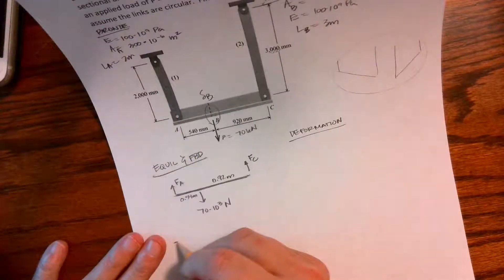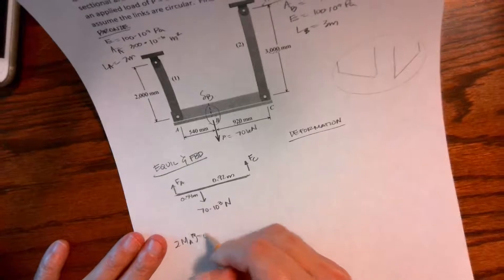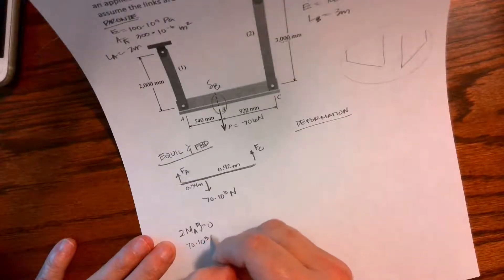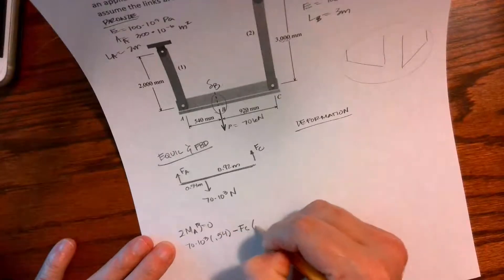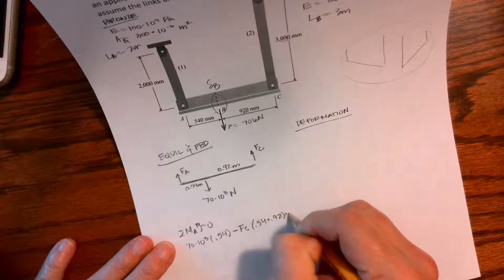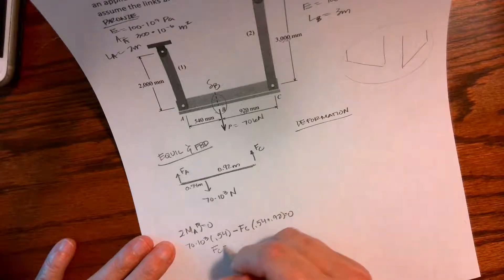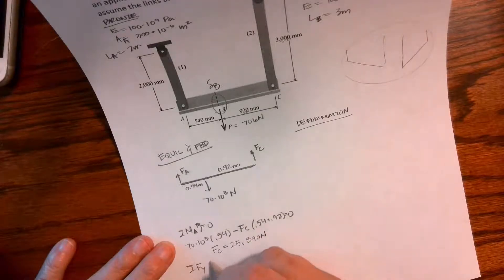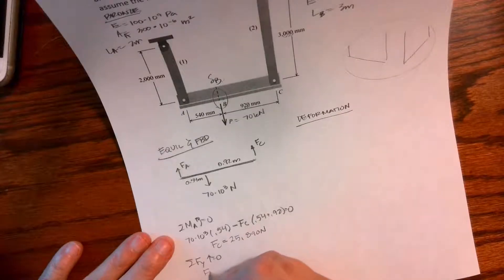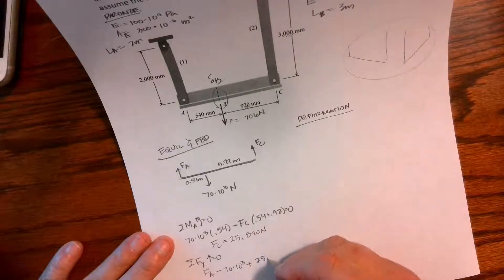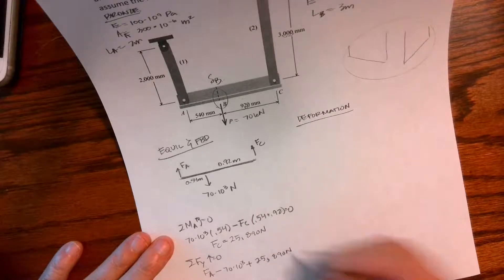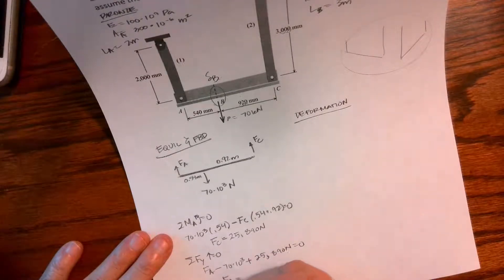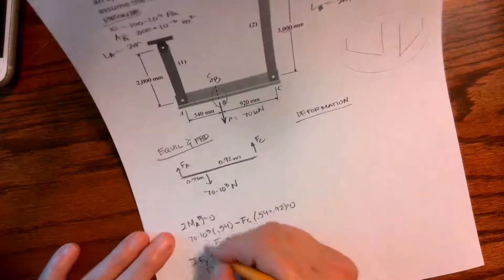Let's sum the moments about A: 70 times 10 to the third times 0.54 meters minus Fc times (0.54 plus 0.92) equals 0. If I calculate correctly, I get 25,890 newtons. Then summing forces in the y direction: force A minus 70 times 10 to the third plus 25,890 newtons equals 0, so the force at A is 44,110 newtons.